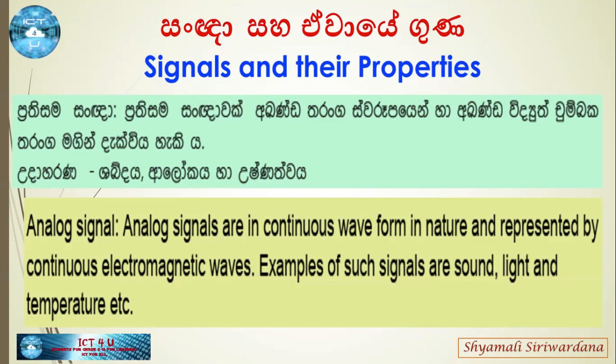Analog signals are in continuous wave form in nature and represented by continuous electromagnetic waves. Examples of such signals are sound, light, and temperature.